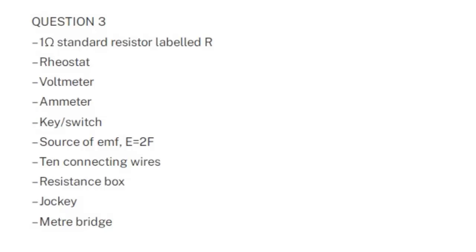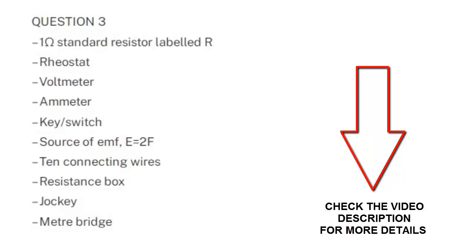For question three, you will be provided with the following apparatus: a one-ohm standard resistor labeled arrow, a rheostat, a voltmeter, a meter key or switch, a source of EMF E equal to 2V, 10 connecting wires, a resistance box, a jockey, and a meter bridge. This means question three will come from electricity.